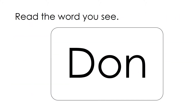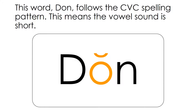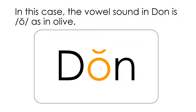Read the word you see: Don. This word Don follows the Consonant Vowel Consonant spelling pattern. This means the vowel sound is short. In this case, the vowel sound in Don is AH as in Olive.